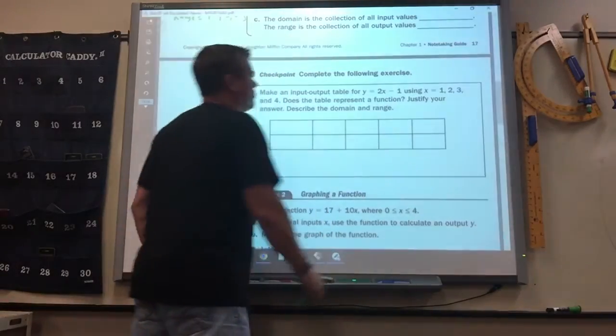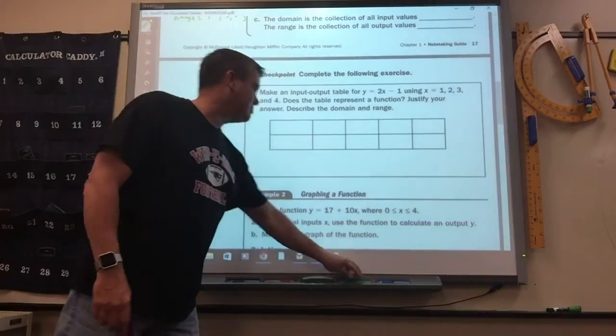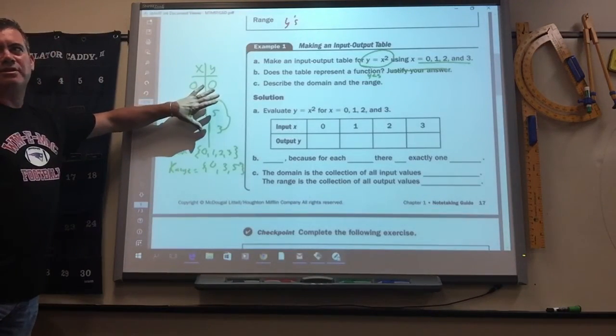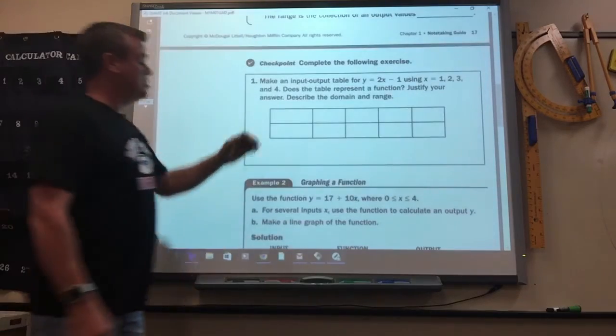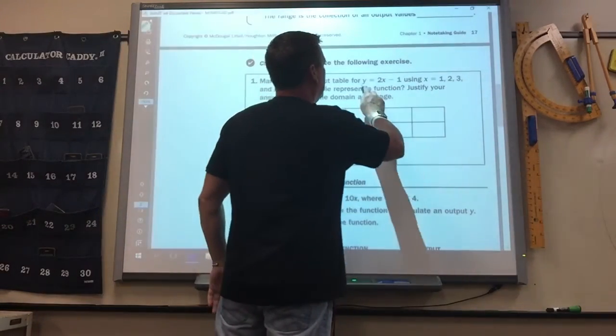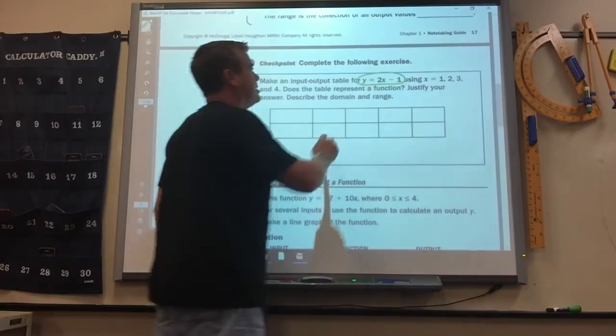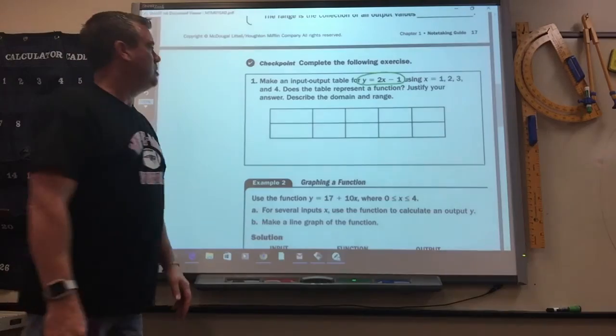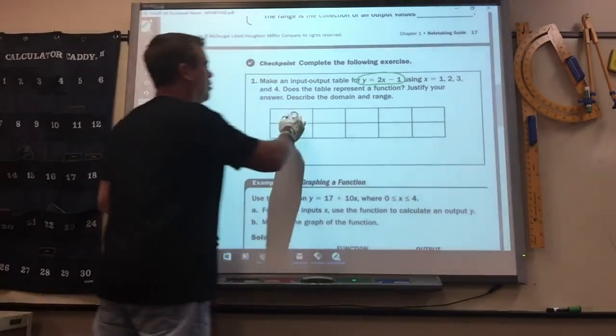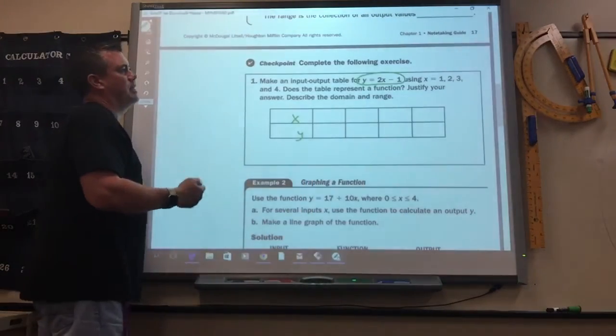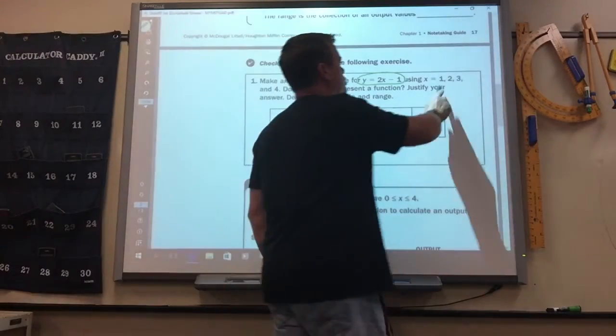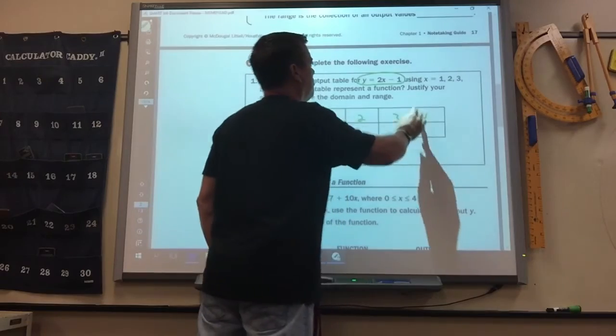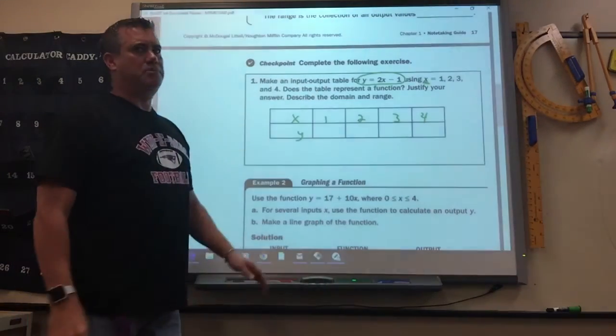So part of the assignment is just looking at a table and saying if it's a function or not. The other part is you're going to be given an equation and you've got to make an input-output table. So again, you can do it up and down or you can do it sideways like this if you want. Now here it tells you to use one, two, three, and four for the x.